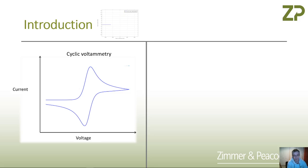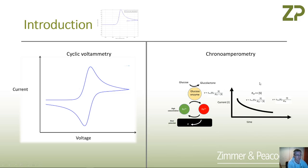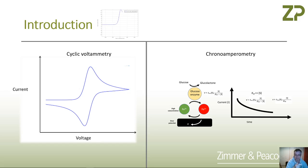In cyclic voltammetry, we obviously sweep the voltage and measure the corresponding current. In contrast, a model biosensor — for example, the glucose strip — has glucose reacting with an enzyme, which then reacts with a mediator. There's a certain complexity in a sensor like a glucose sensor, where you have substrate, an enzyme, a mediator, and an electrode. Whereas in cyclic voltammetry analysis of materials, you often just have a mediator and the electrode itself — a much simpler system.